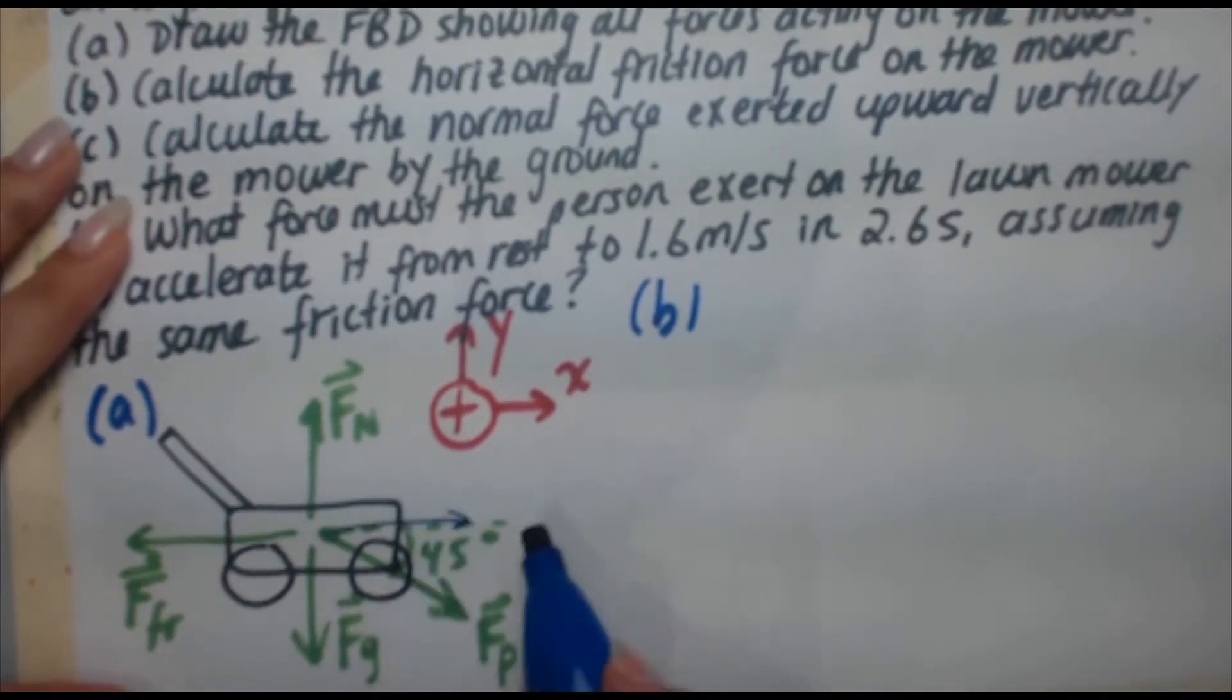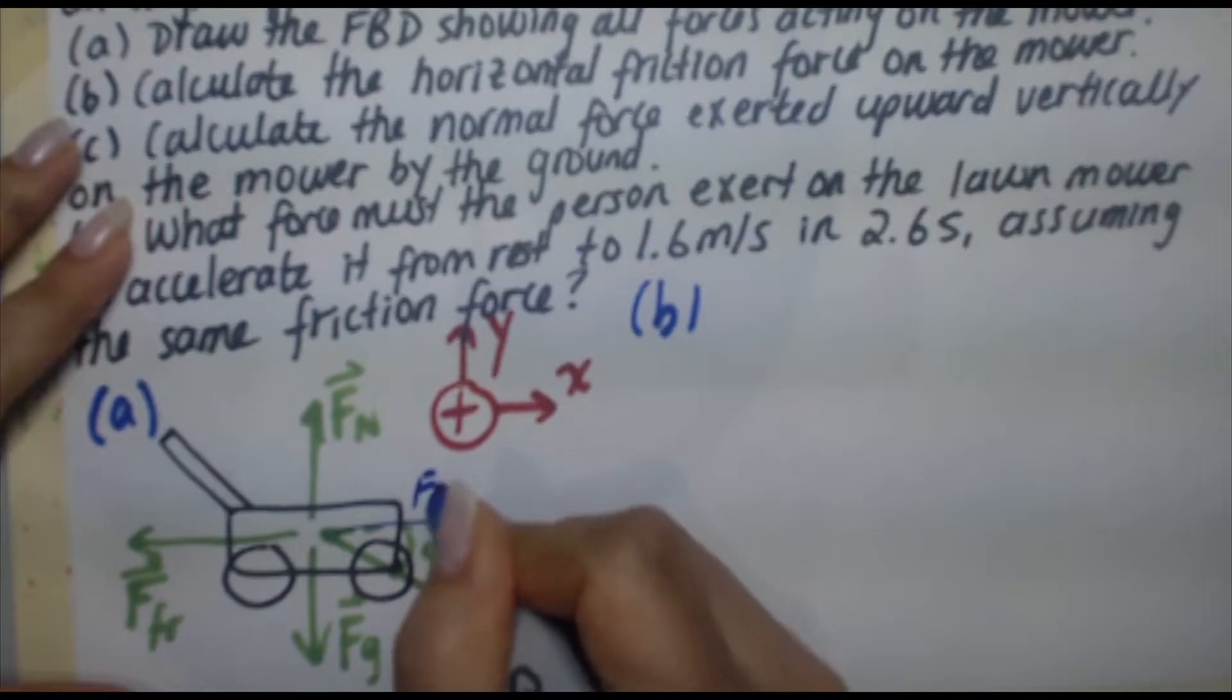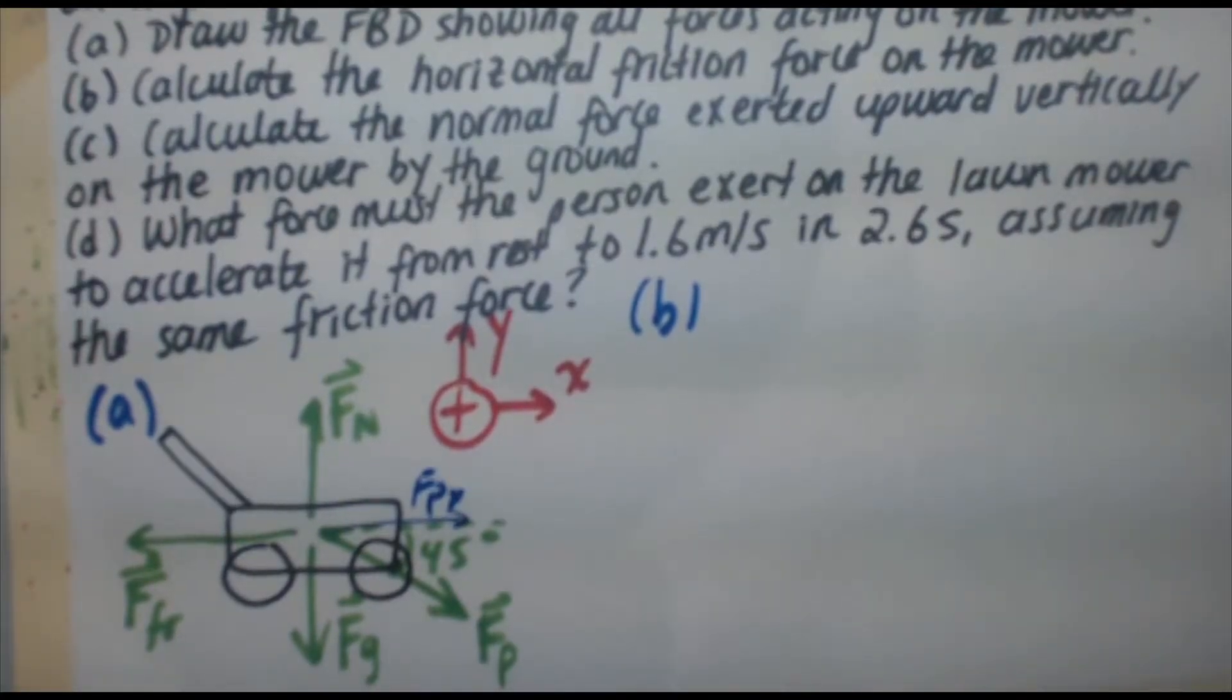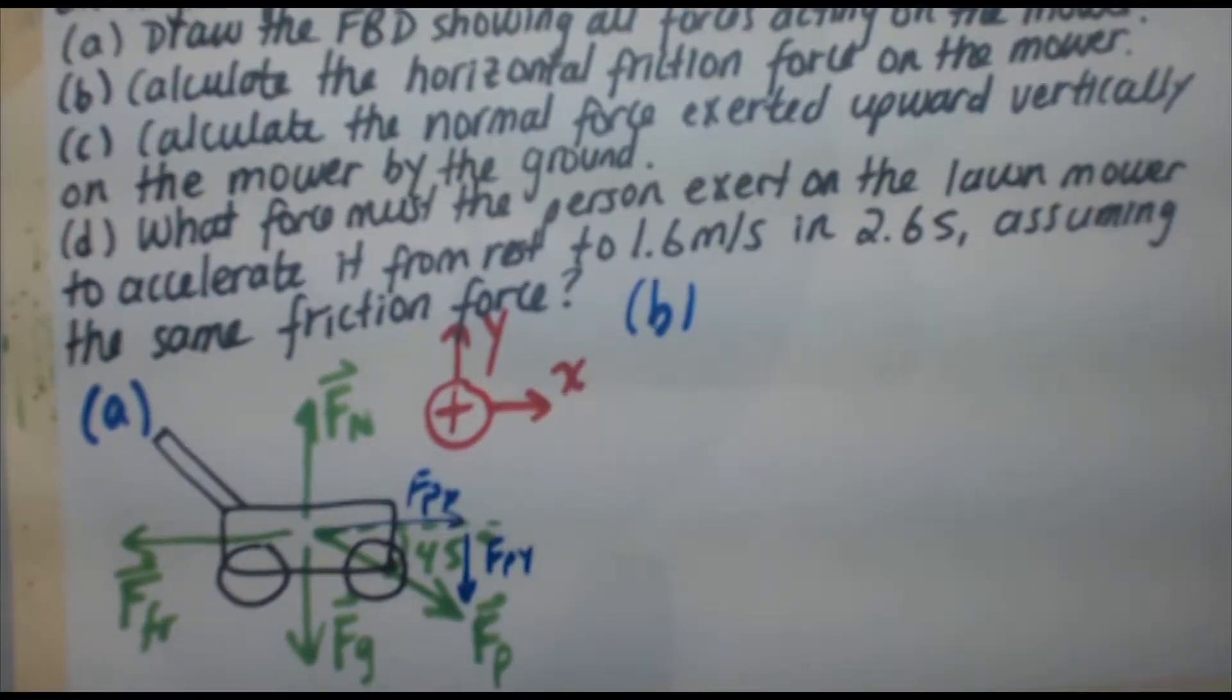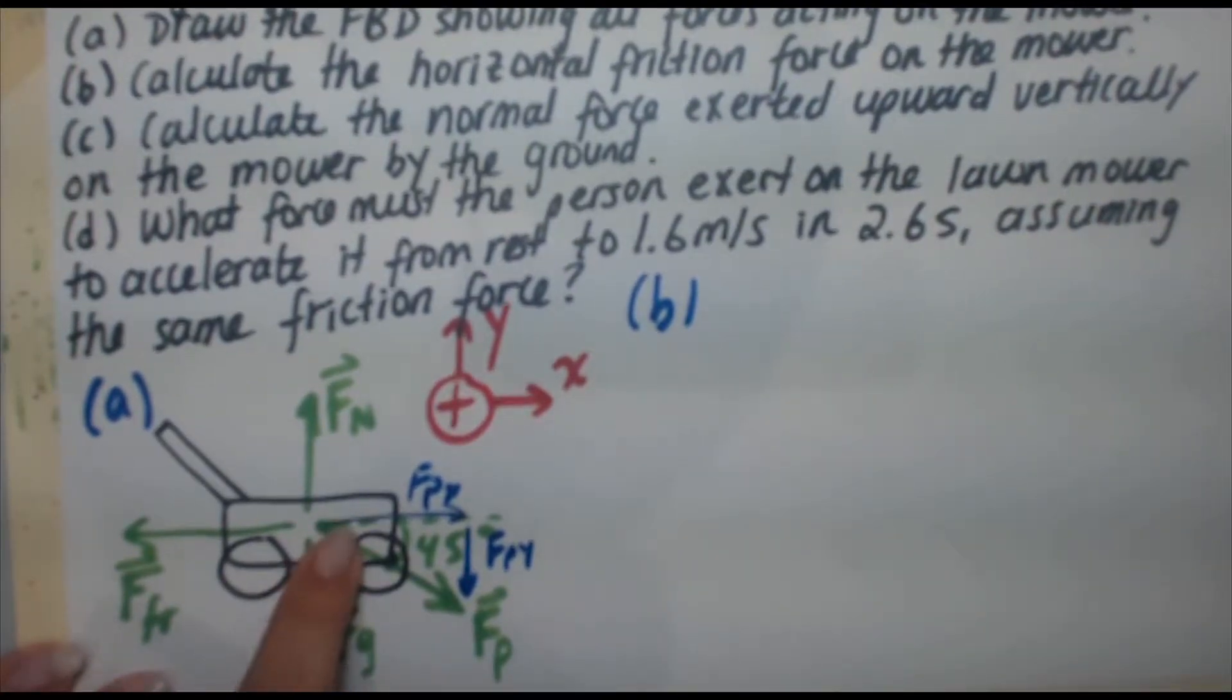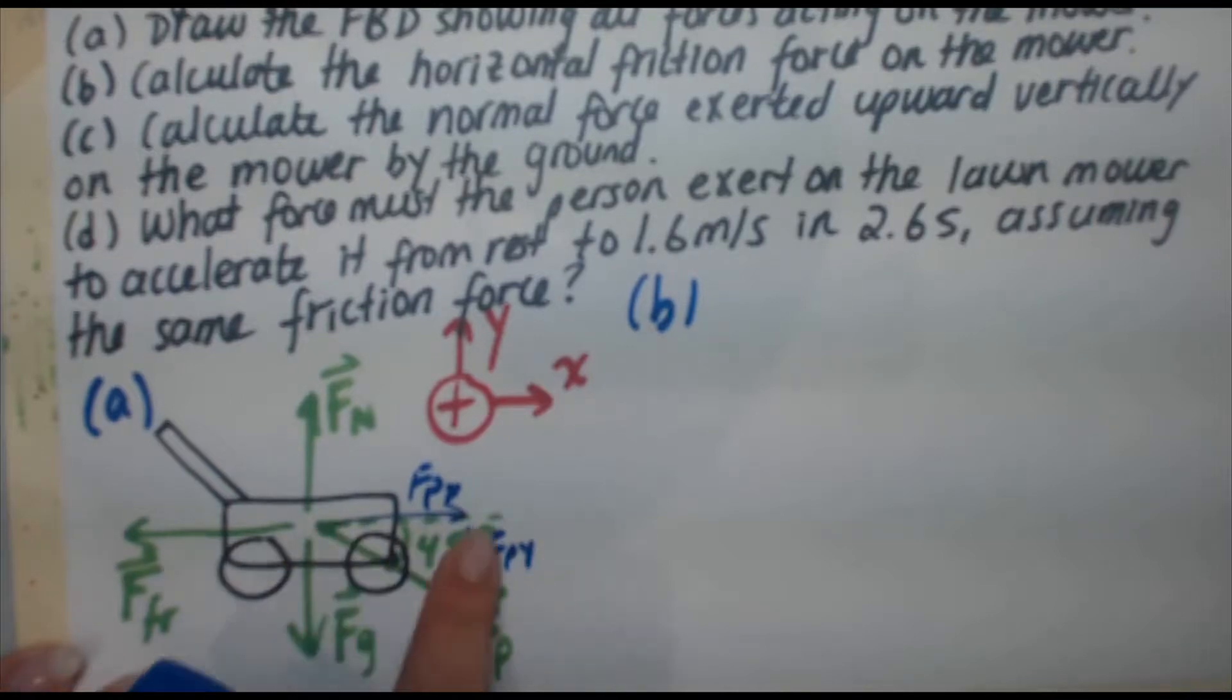So the only forces that have horizontal components are friction and Fp. Fp's horizontal component is right here. That's Fpx. And of course, if you completed that right angle triangle down here, you'd get Fpy. Okay, we're only dealing with Fpx here. But take a look at that. The arrow is actually going to the right.